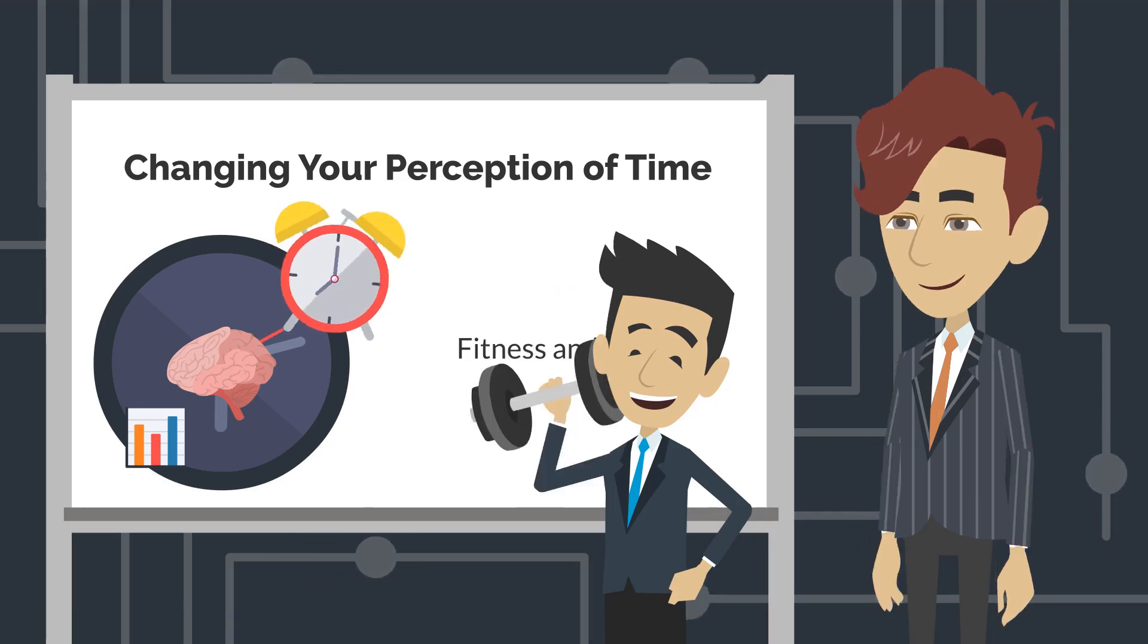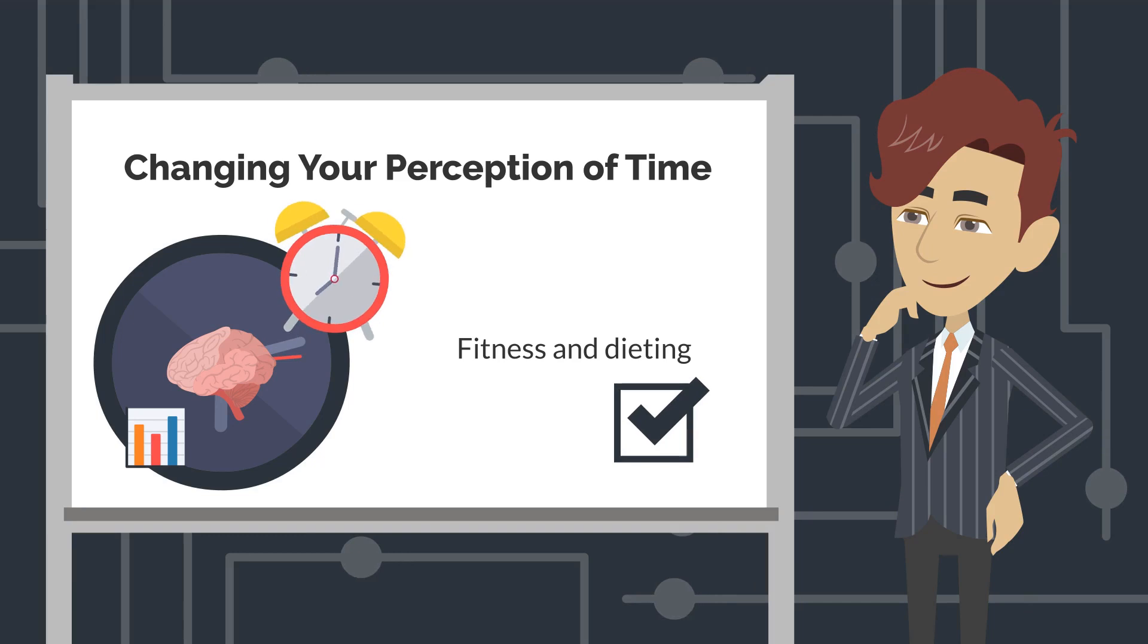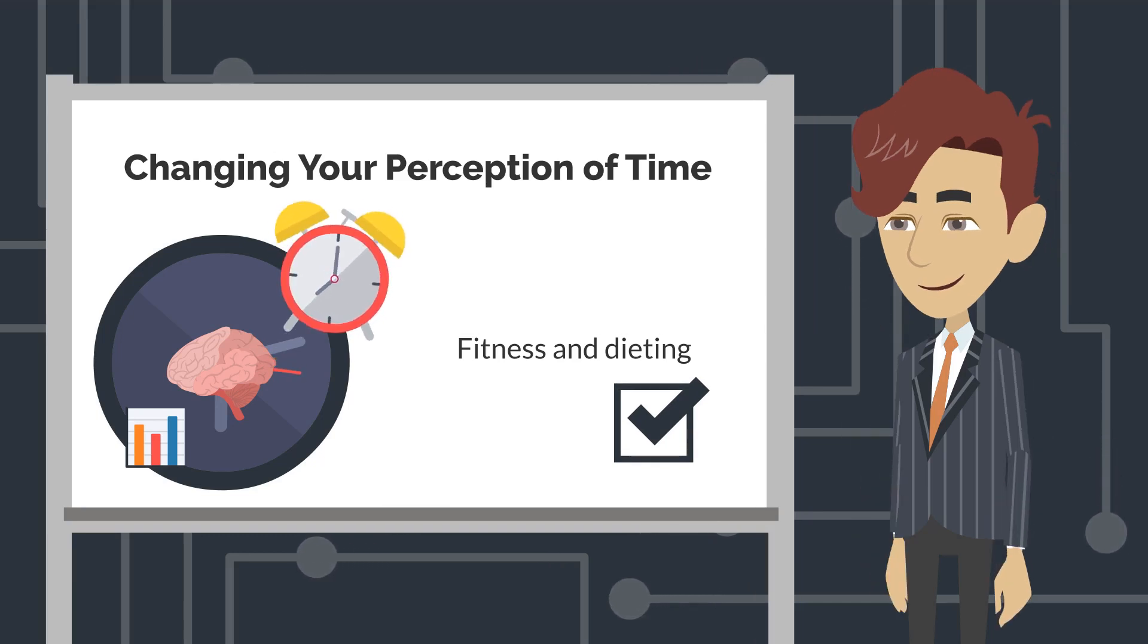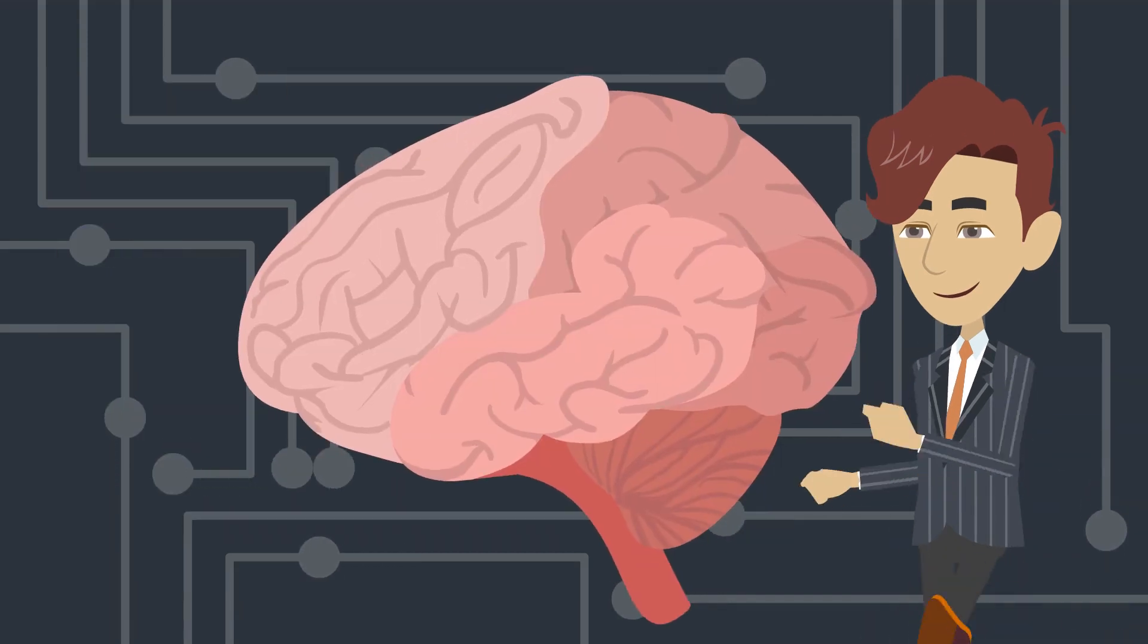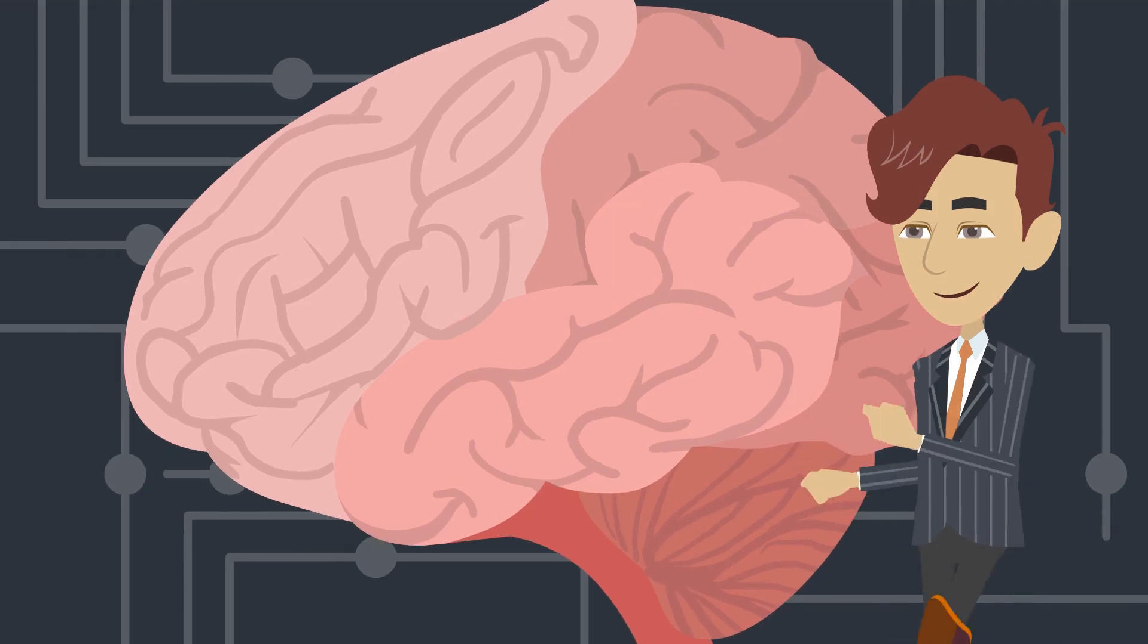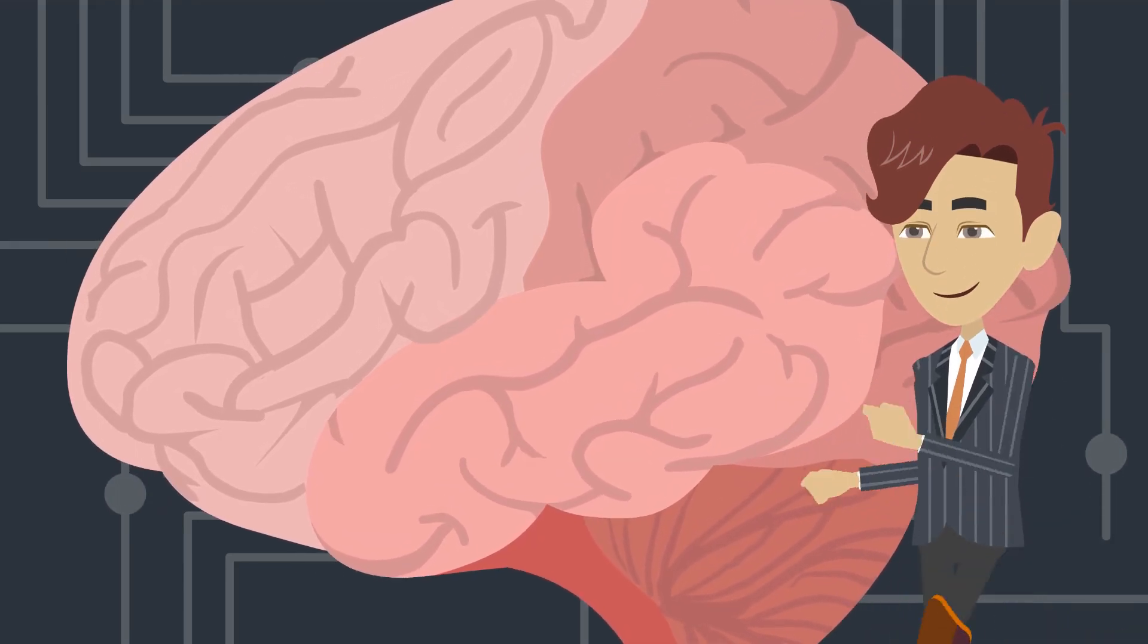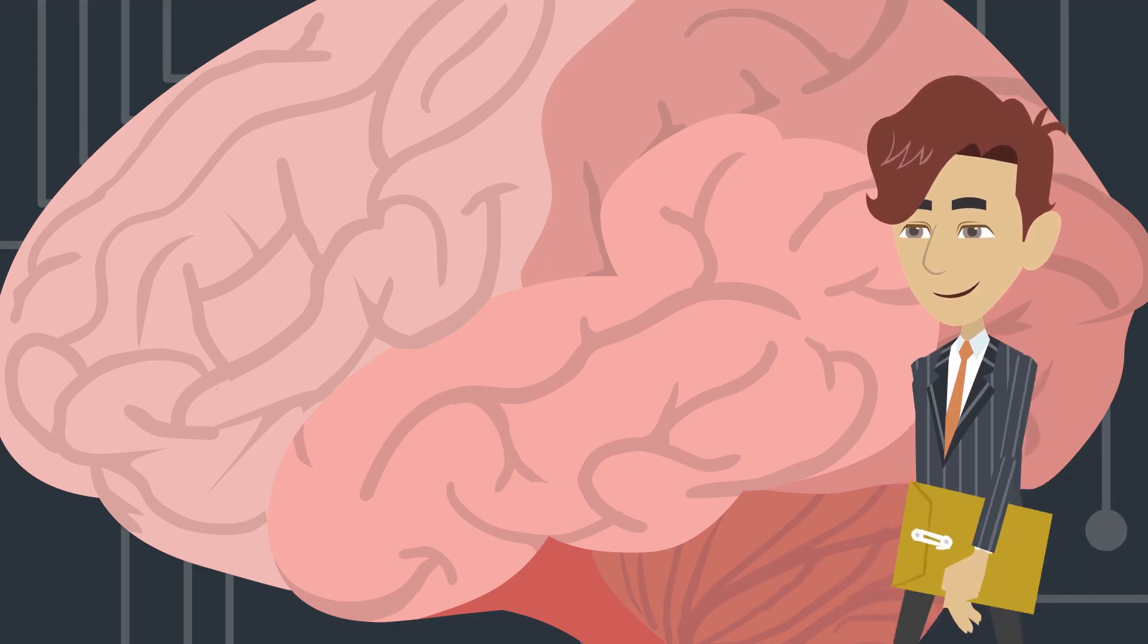Dieting also has a similar effect on changing your perspective, as it focuses on small changes over time. The power of the mind is a powerful thing. It can either be used for good or bad. You have great power to help others and make a difference if you use it wisely. The power of the mind is what makes us human and sets us apart from other animals.